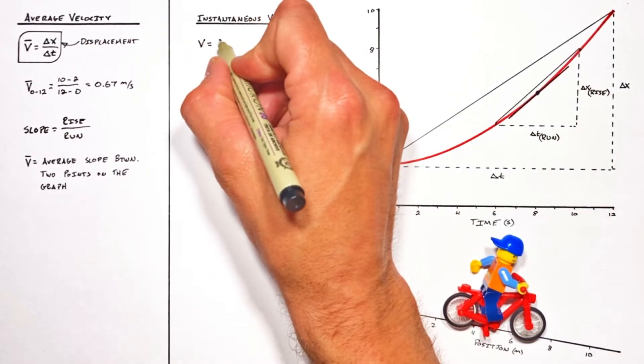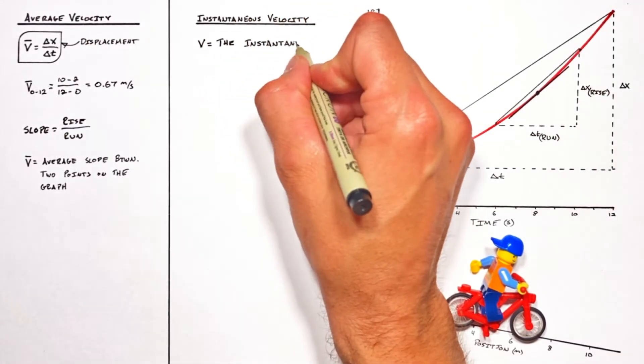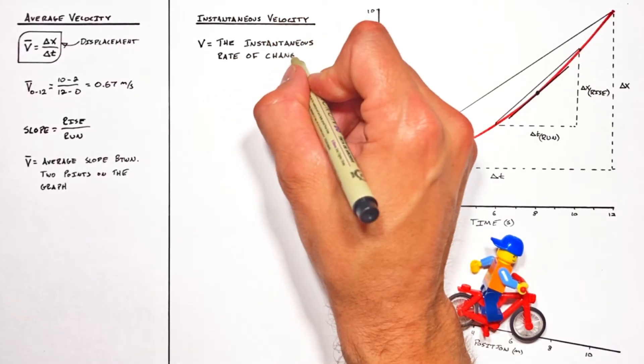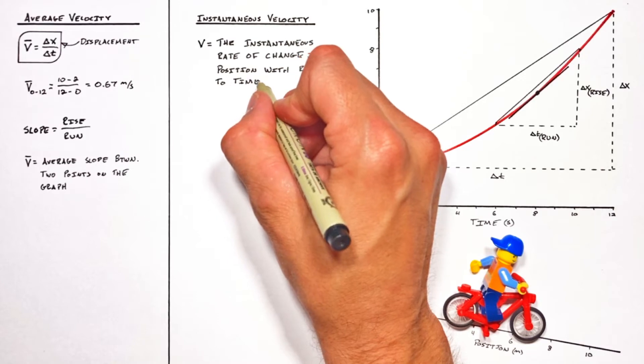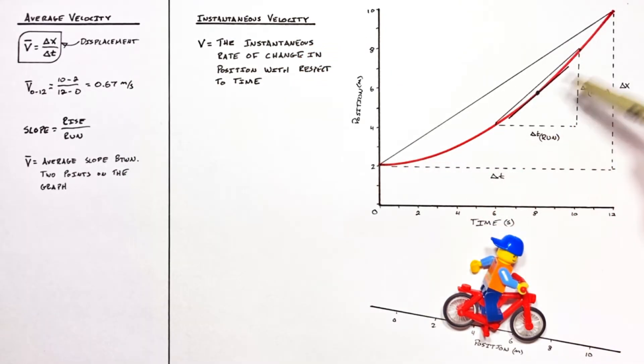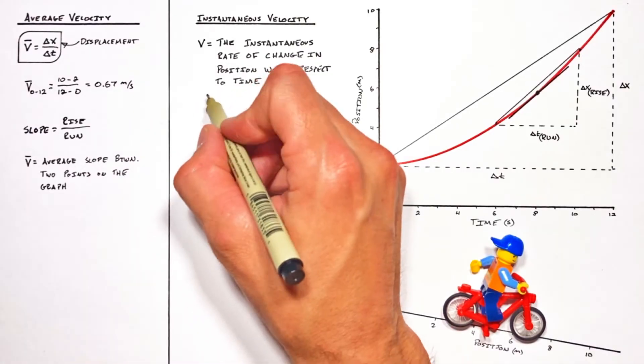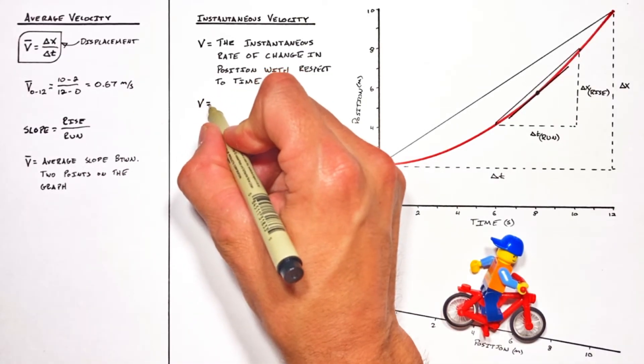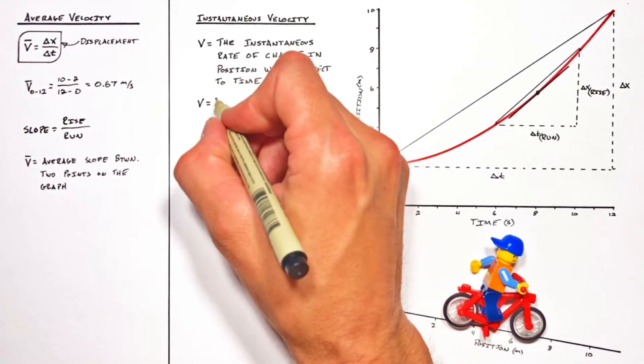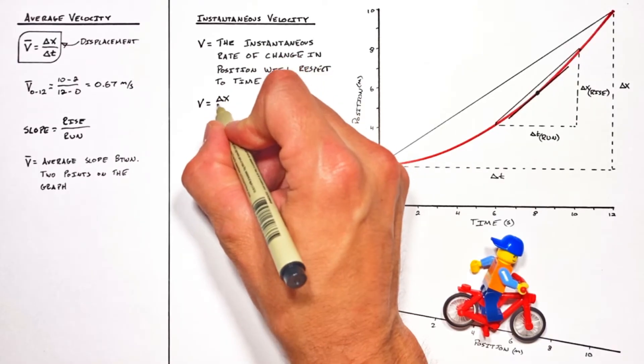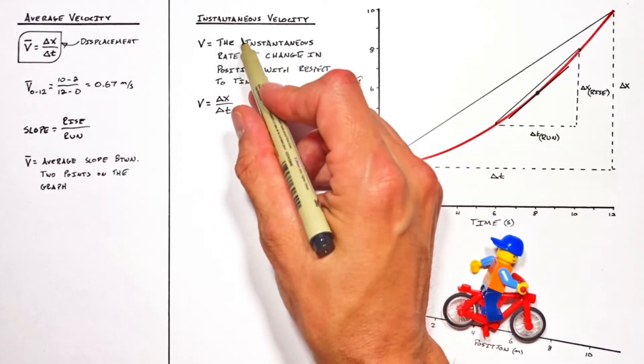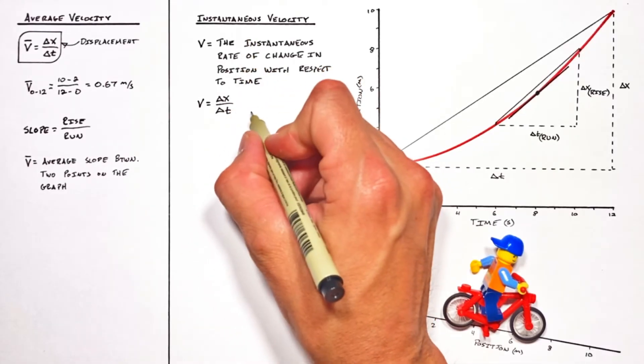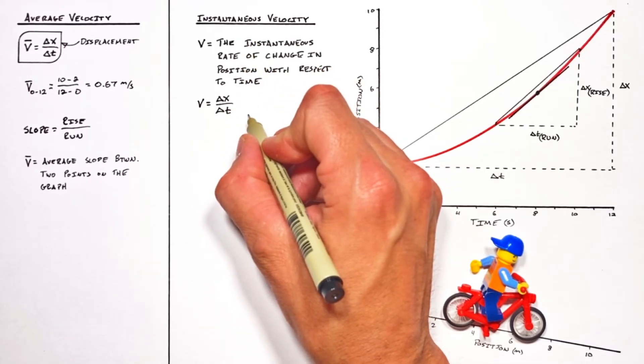See, if you look in a physics book, instantaneous velocity is given as the instantaneous rate of change in position with respect to time. Really that just means how quickly the position is changing on a graph. And mathematically, the instantaneous velocity actually follows this same equation, change in position over change in time, except when we're talking about instantaneous velocity, this change in time is infinitely small.